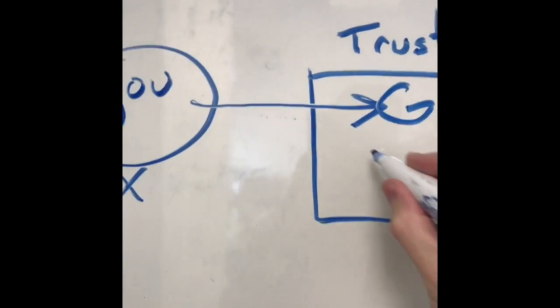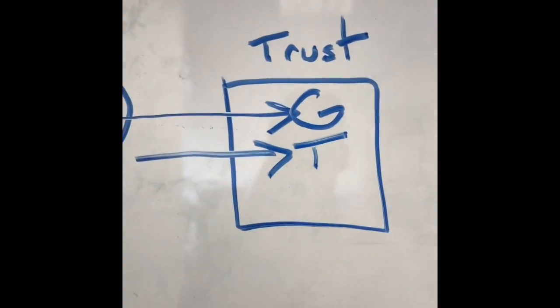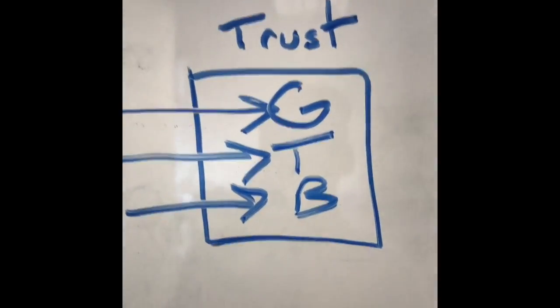You become the grantor, you become the trustee, which means the manager of the trust, and you become the beneficiary, which means the stuff is still yours to use.